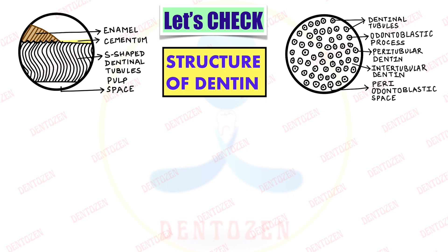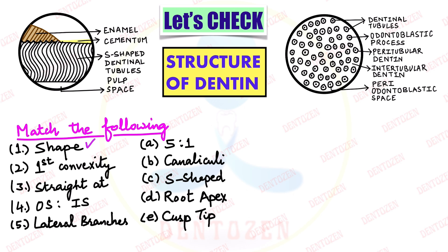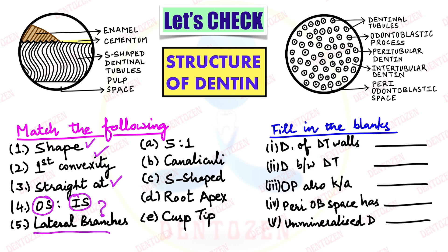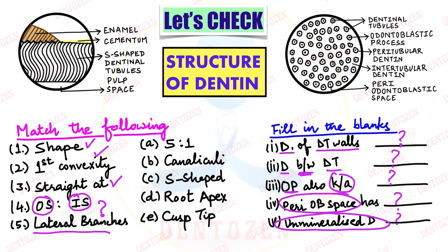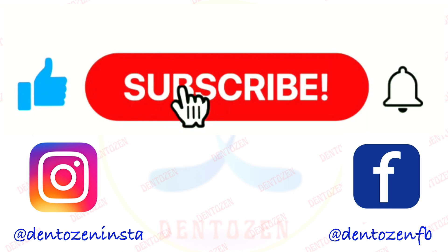Let's check what you have learned. Look at these two diagrams — there are two sets of questions. First, match the following: shape of dentinal tubules, direction of first convexity, areas where tubules are straight, ratio of outer to inner surface of dentine, and the name for lateral branches. Second, fill in the blanks: which dentine forms the tubule walls, which dentine is present between tubules, another name for the odontoblastic process, what is present inside the periodontal space, and the term for unmineralized dentine. Let me know your answers in the comment section below. If you enjoyed the video, tap the like button. Keep watching, keep learning, and good luck for your exams!